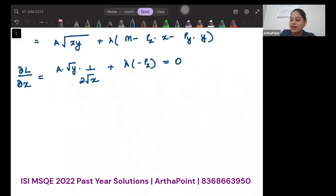Similarly, when you differentiate this with respect to y, you will get a√x · 1/(2√y) + λ·(-py) = 0.